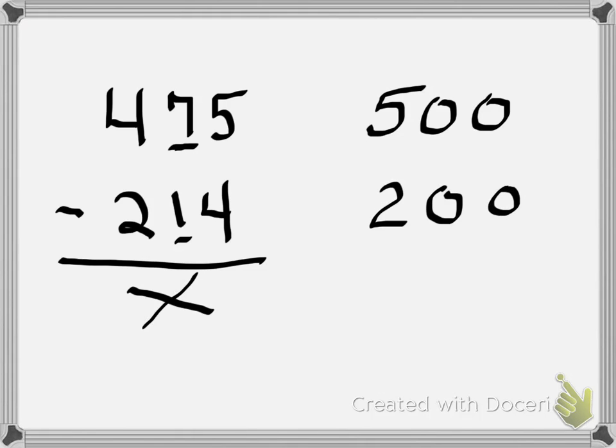Now remember, differences mean this is about subtracting. 500 minus 200 is 300. So the estimate for 475 minus 214 is 300.